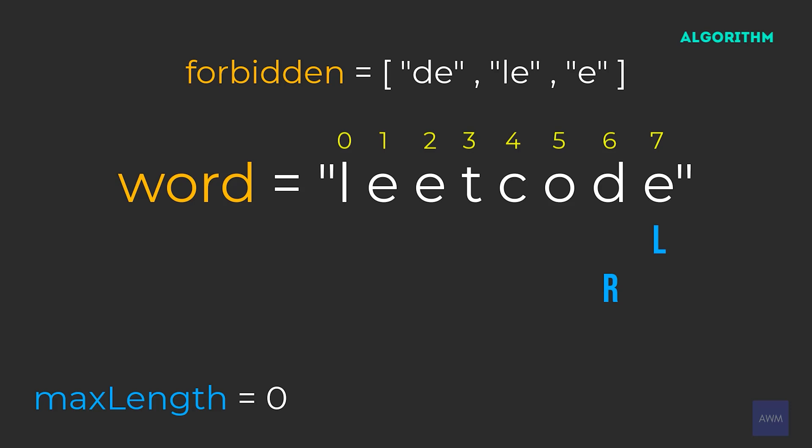Since we identified an invalid substring, we're also going to decrease our left pointer. Once again, starting at our left pointer, we iterate up to our right pointer. We're looking at substring D, and that is valid because D does not exist in forbidden. So now we can compute our new max length, which is right minus left plus one. Right minus left plus one evaluates to one — that is our new max length. We do plus one because our left and right pointers are indices (zero-based) but we're computing a length.